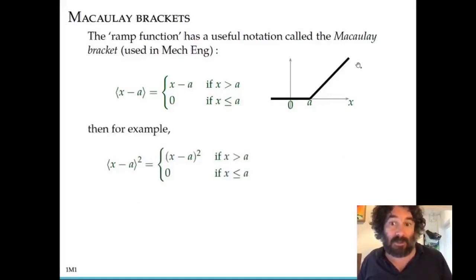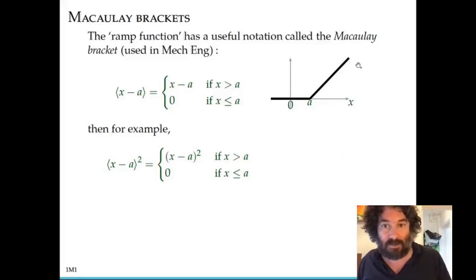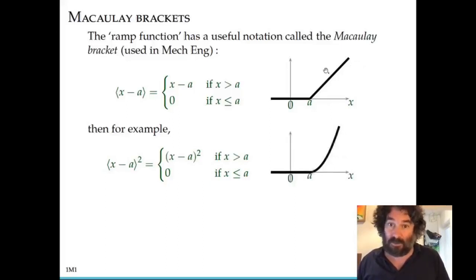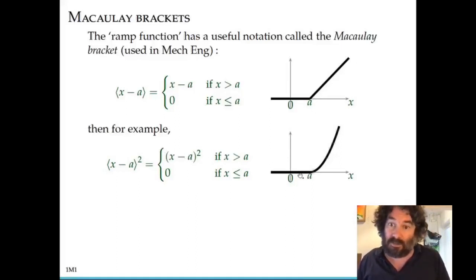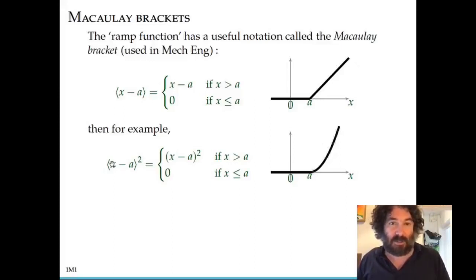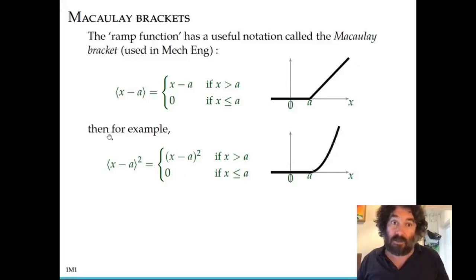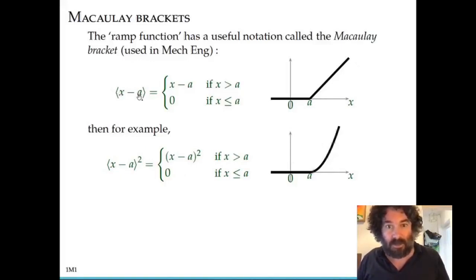Another example using the Macaulay bracket notation is the bracket squared. This function, when you square it, equals X minus a squared when X is larger than a, and 0 when X is less than a. One thing to notice is that you can treat this using the same rules for differentiating polynomials as you normally would. So if you want to take the derivative of the Macaulay bracket X minus a squared, you get 2 times the Macaulay bracket X minus a. You can also integrate: the integral of the Macaulay bracket X minus a is one-half the Macaulay bracket X minus a squared over 2.